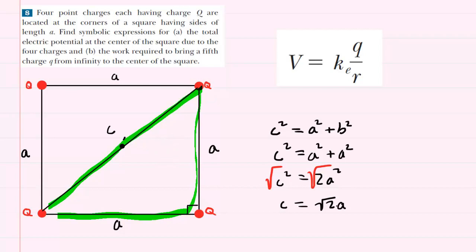Therefore, the distance we seek from here to here will be half of this distance, so we'll have the square root of 2A divided by 2. So that will be the distance from each charge to the center.